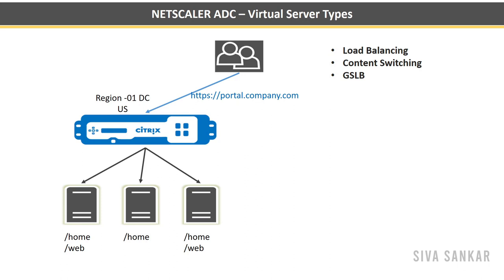Now let's talk about load balancing methods: round robin and least connection. Round robin means when the first request comes it will be sent to server one, second to server two, third to server three. With least connection, let's say there are 10 sessions connected to each of the three servers, and server three reboots — the 10 sessions from server three will automatically be balanced to servers one and two.